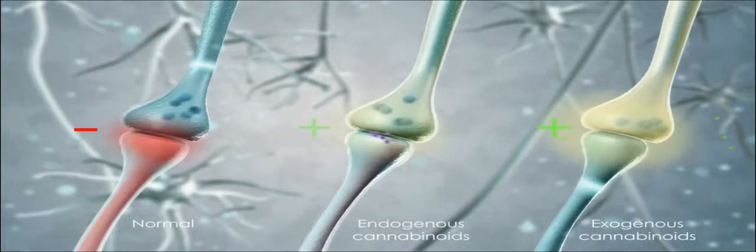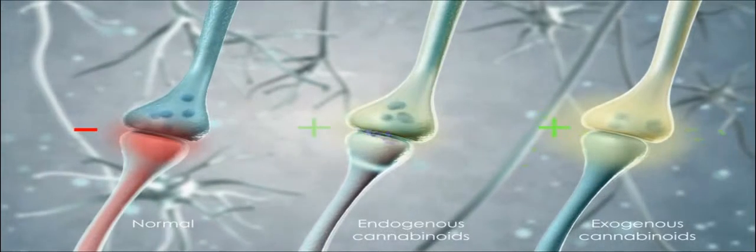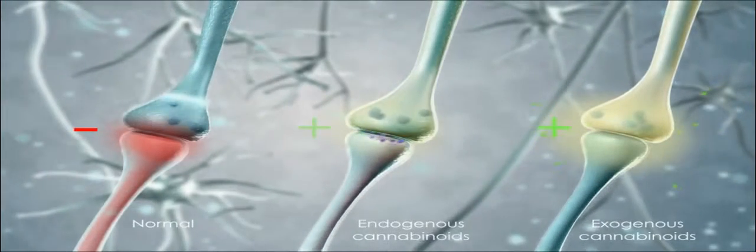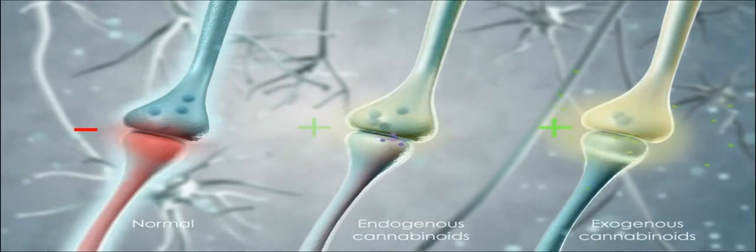Exogenous cannabinoids exert their modulatory effects upon the abundant cannabinoid receptors distributed throughout the CNS.